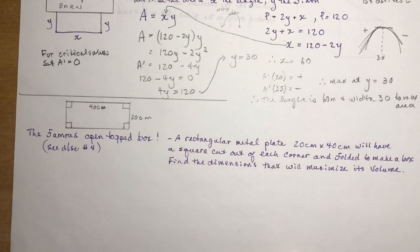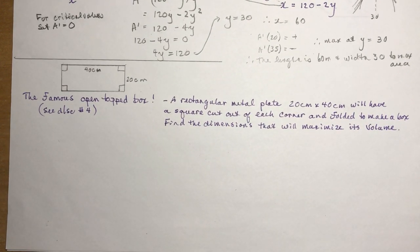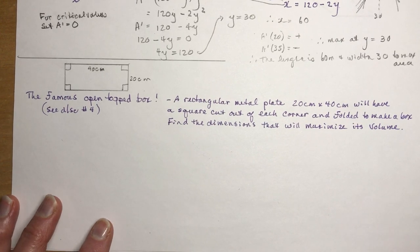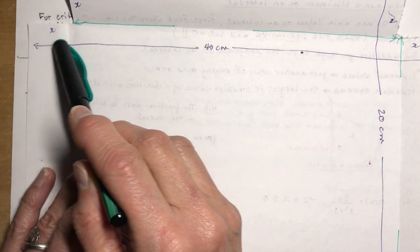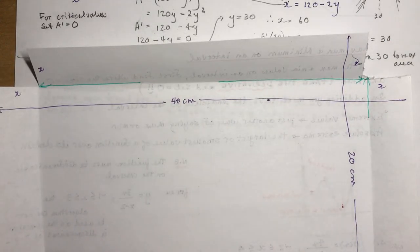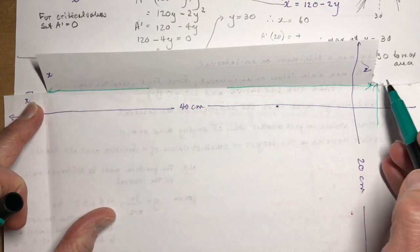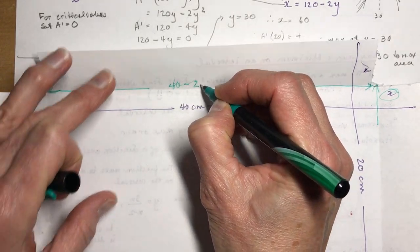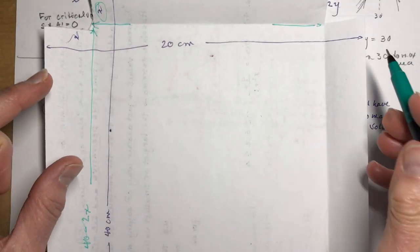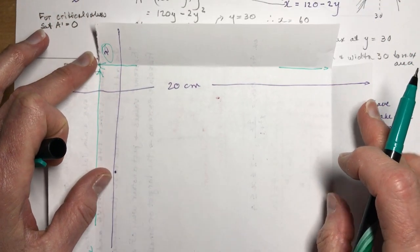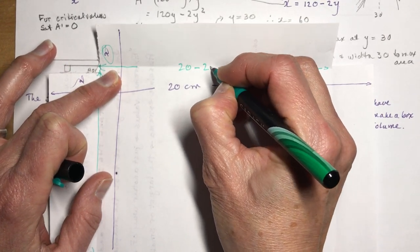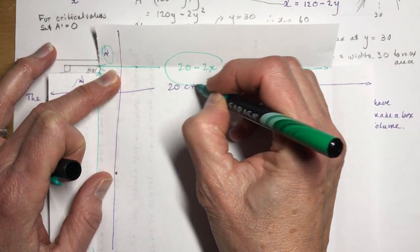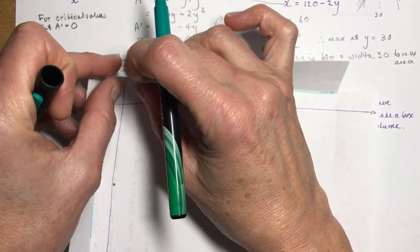Another very famous question is the open-top box question. I have a little visual here — a piece of paper I've set up to cut out. If this length is 40 centimeters, then the length between the cut squares is 40 minus 2x. On the other side, if it's 20 centimeters and I take out an x on each side, I get 20 minus 2x. You probably know this from previous courses. If I fold up the sides, I get an open-top box.